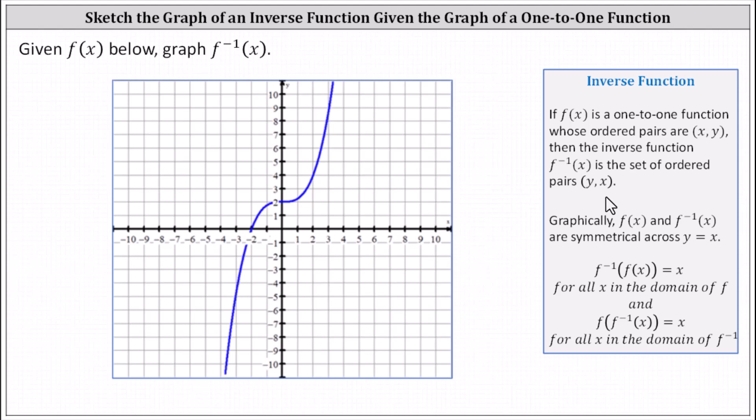It's also important to recognize the given function is one-to-one because only one-to-one functions have inverse functions. Recall, the graphical test to determine if a function is one-to-one is to use the horizontal line test, where if a horizontal line never intersects a graph in more than one point, then the graph does represent a one-to-one function. It may appear as if at y equals two there's more than one point of intersection, but there's actually not, and we should know this because this looks like a cubic function.